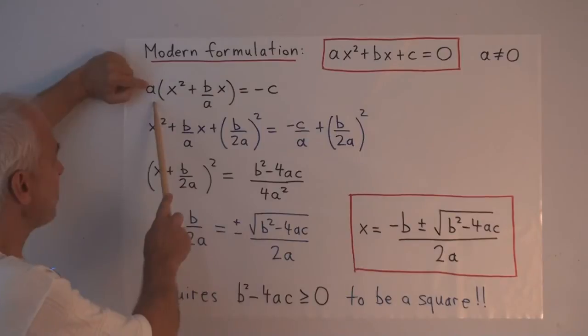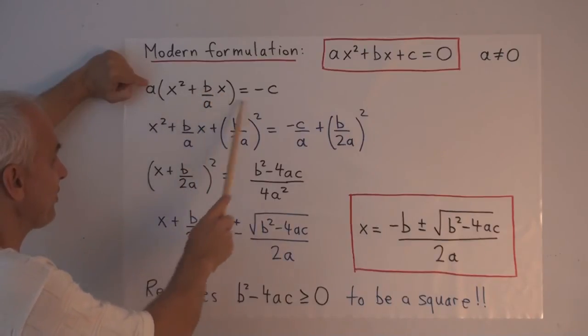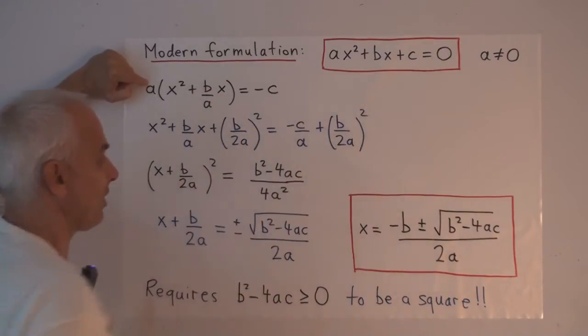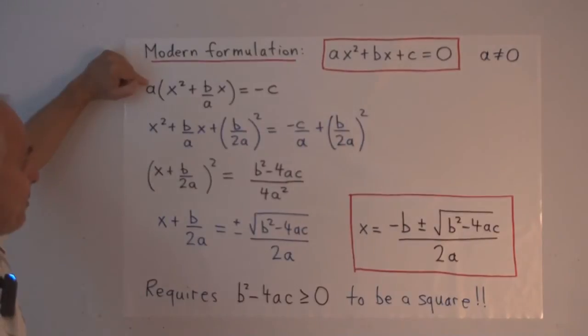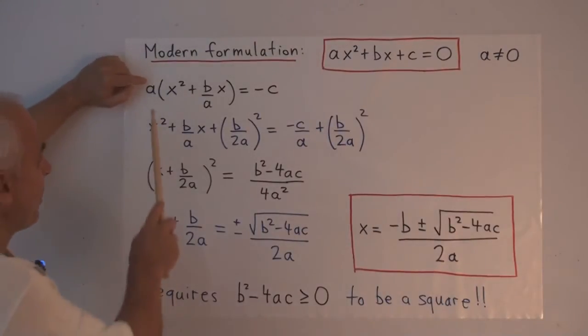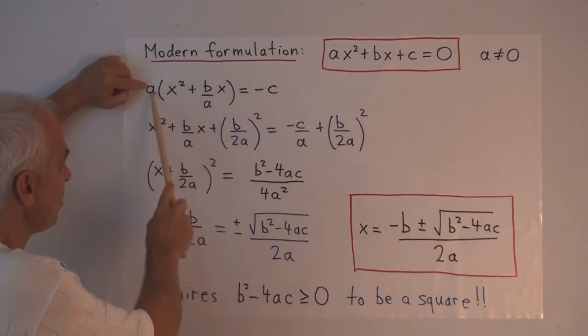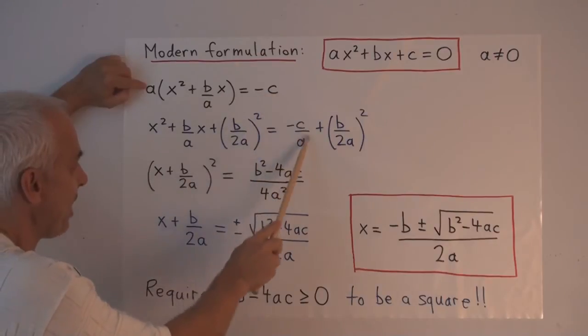What are the various steps to go from here to here? So what do we do? First thing is, we take the a and we take it as a factor: a times x squared plus b over a times x. And we bring the c to the other side, giving us minus c there. We divide by a, so this a comes over the other side as minus c over a.